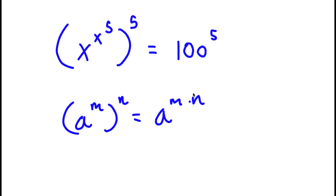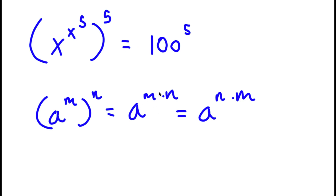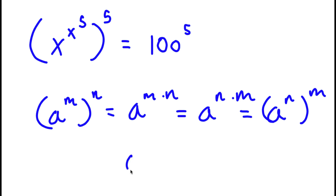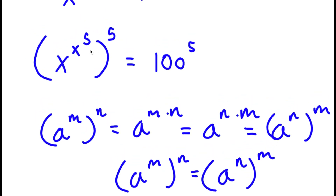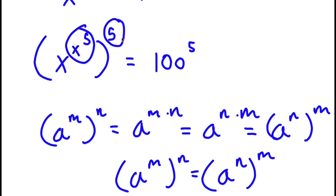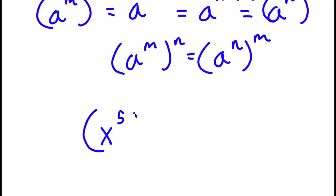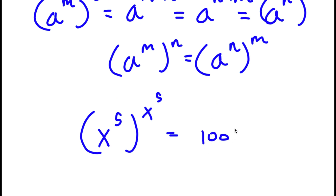m and n — we can swap the order of these two, so this is the same thing as a to the power of n times m. If a to the power of m times n equals a to the power of m to the power of n, then a to the power of n times m equals a to the power of n to the power of m. In simpler terms, a to the power of m to the power of n equals a to the power of n to the power of m. So I can think of x to the power of 5 as m and 5 as n, and if I switch the places of these two, I get x to the power of 5 to the power of x to the power of 5, equal to 100 to the power of 5.